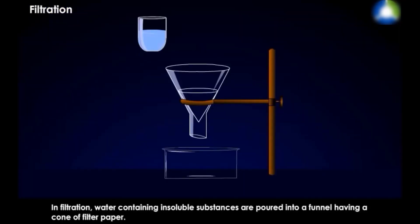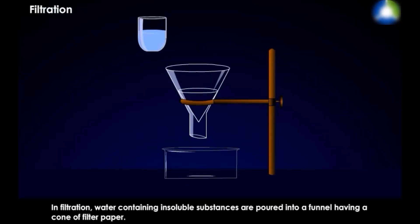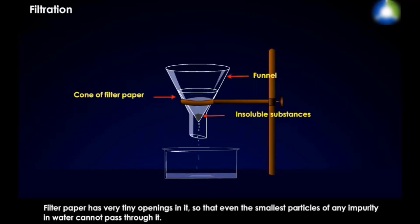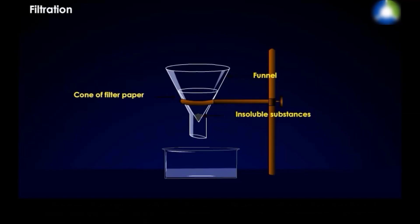Now the second method is filtration. In filtration, water containing insoluble substances is poured into a funnel having a cone of filter paper. Insoluble substances are caught in the filter paper. Filter paper has very tiny openings in it, so that even the smallest particles of any impurity in water cannot pass through it. The clear water collected in the vessel is called filtrate.